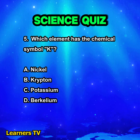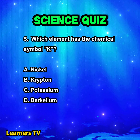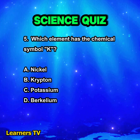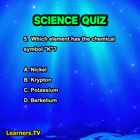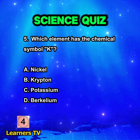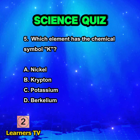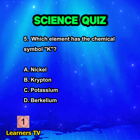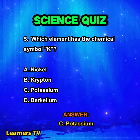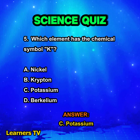Which element has the chemical symbol K? A. Nickel. B. Krypton. C. Potassium. D. Berkelium. The answer is C. Potassium.